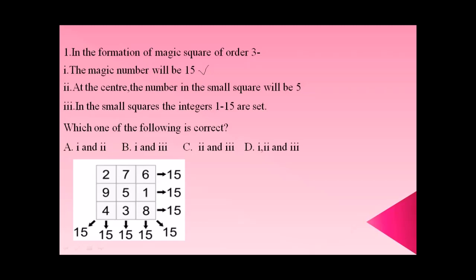The number at the center small square will be 5. Whenever you place numbers 1 to 9 in a 3×3 magic square, 5 will always be at the center — so statement two is also correct. For statement three: the integers used are 1 to 15, but we actually use 1 to 9. So statement three is not correct.